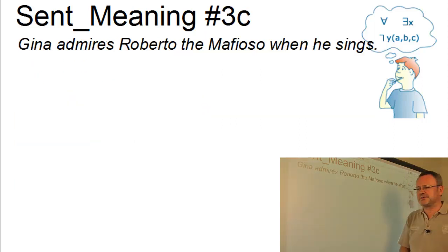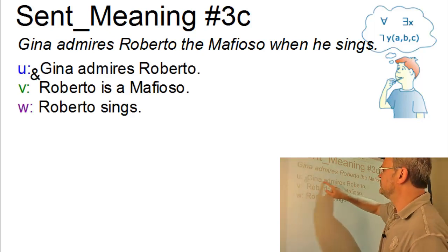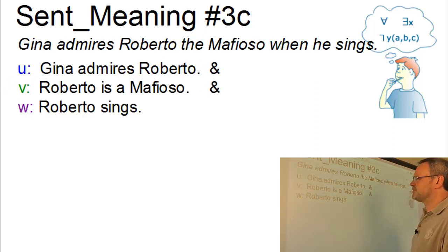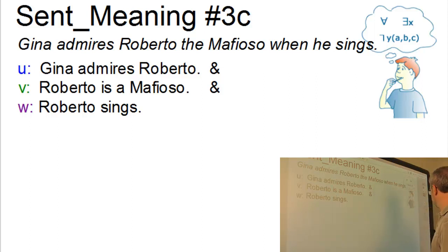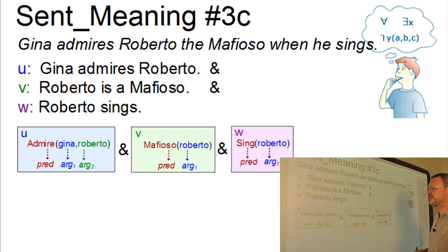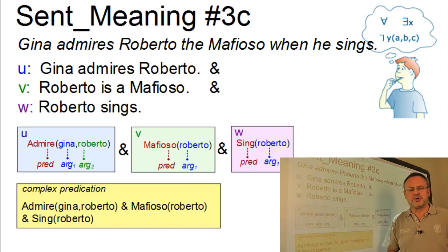Our last example looks complicated but it isn't. It is a conjunction with three conjuncts: U — Gina admires Roberto — V — Roberto is a mafioso — and W — Roberto sings. Each conjunct is in fact a simple predication. The first, U, is a two-place predicate, and then we have two one-place predicates: 'mafioso Roberto' and 'sings Roberto'. The result is a complex predication where the individual predicates — admire, mafioso, and sings — are simply conjoined by 'and'.